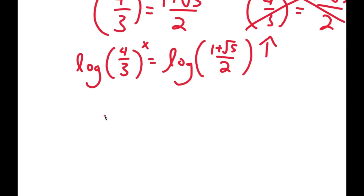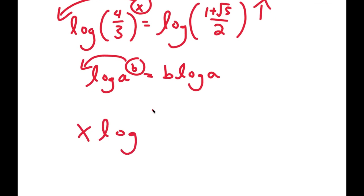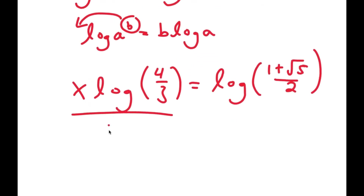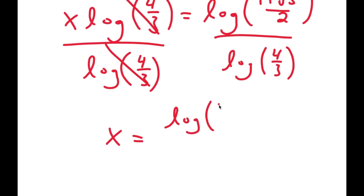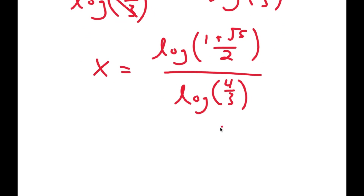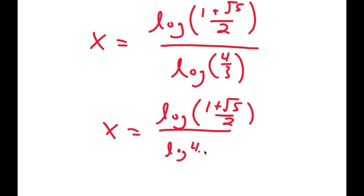Now if I have something in the form log a to the power of b, I can move the exponent b to the front, so it equals b times log a. In this case I have log of 4 over 3 to the power of x, and I can move x to the front. So I get x times log 4 over 3 is equal to log of 1 plus the square root of 5 over 2. I can isolate x by dividing both sides by log 4 over 3, giving x is equal to log of 1 plus the square root of 5 over 2, all over log 4 over 3. And log 4 over 3 can be rewritten as log 4 minus log 3.